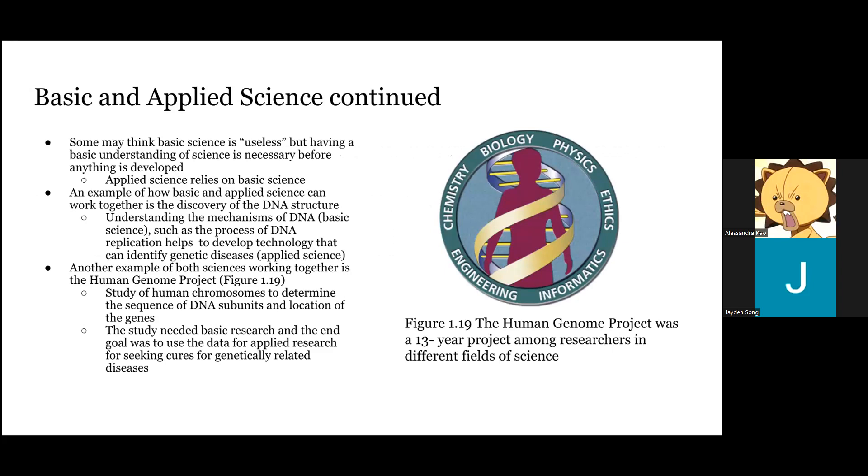An example of how basic and applied science can work together is the discovery of DNA structure. Understanding the mechanism of DNA—basic science—such as the process of DNA replication, helps to develop technology that can identify genetic disease, which is applied science.